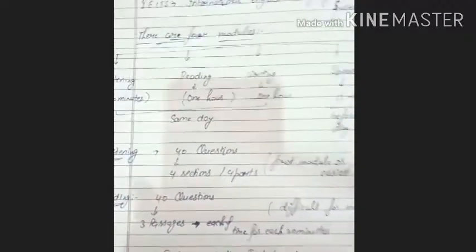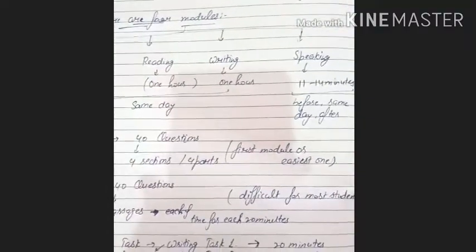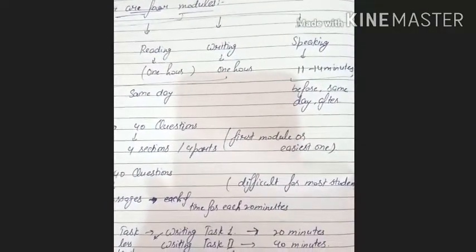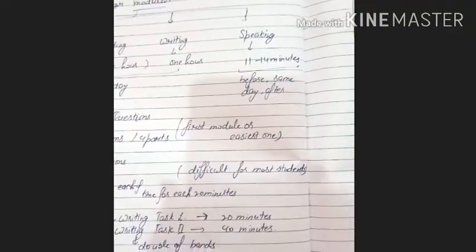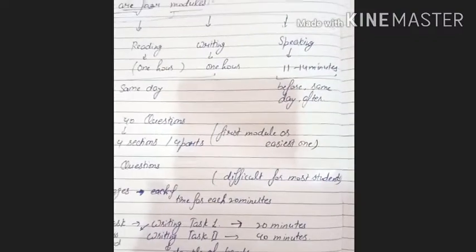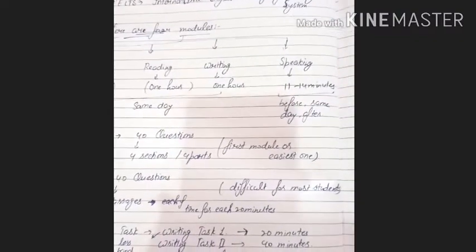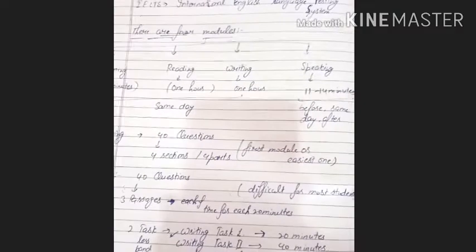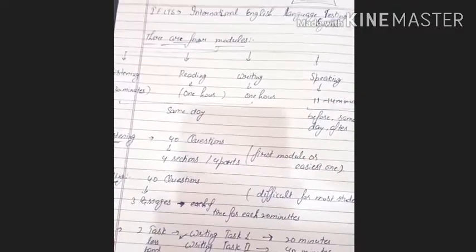In the listening, we have 40 questions and there are 4 sections, or these days, these are counted as 4 parts. This is the first module of IELTS test. When we are going to give IELTS examination, first of all, listening is going to be conducted.